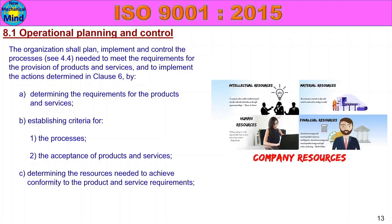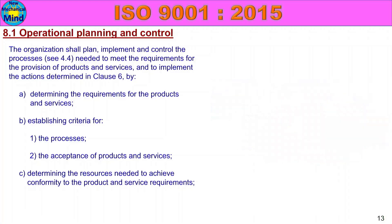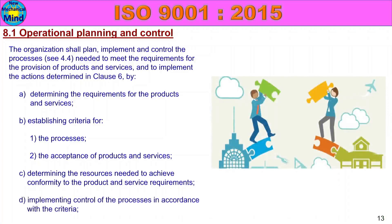Determining the resources needed to achieve conformity to the product and service requirements — the product and service quality must meet customer requirements. If you need resources, you can arrange them to meet the requirements. Implementing control of the processes in accordance with the criteria — the process must remain in control according to the criteria and activity, so the criteria will be completed.